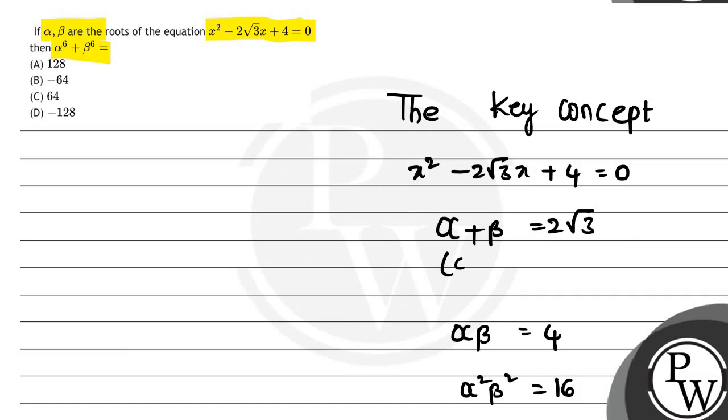Squaring both sides of α + β = 2√3, we get (α + β)² = 12. So α² + β² = 12 - 2αβ = 12 - 8 = 4.